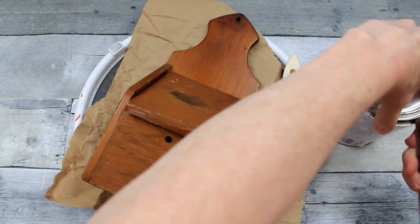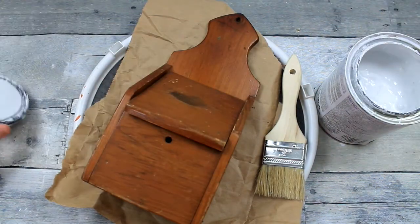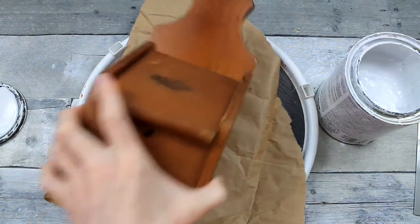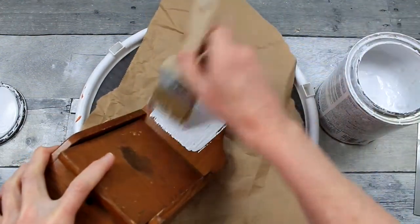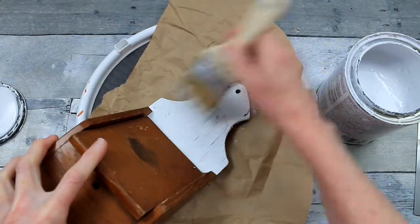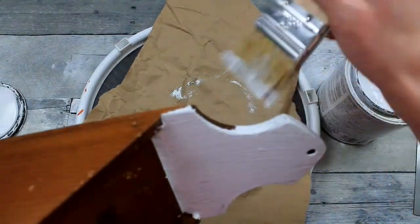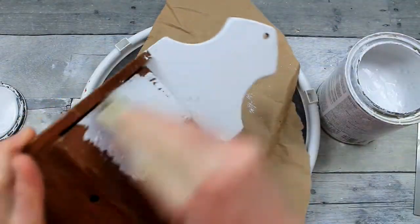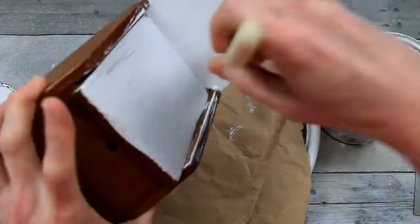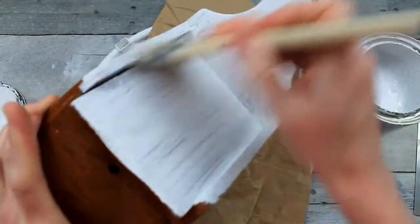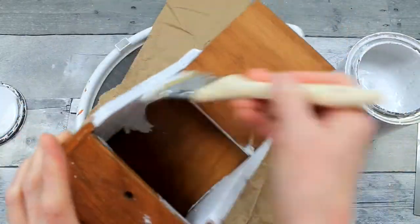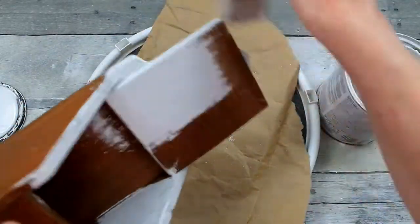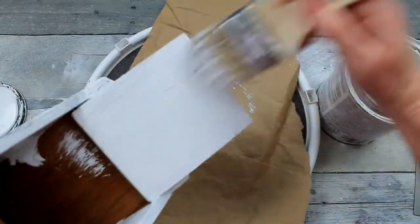And then, I'm going to take my Rust-Oleum chalk paint. This is a linen white. And I'm just going to coat this entire thing down. Kind of sloppy. Kind of sloppy looking. When you first put this on, if you've never used chalk paint, you really start thinking, what have I done? But, be sure you get up all in the nooks and crannies and corners and just give it a good coat. I promise you, it does get better.